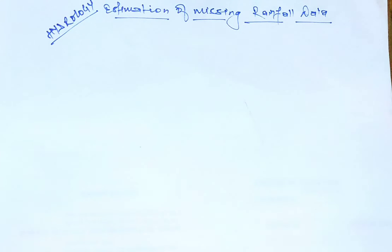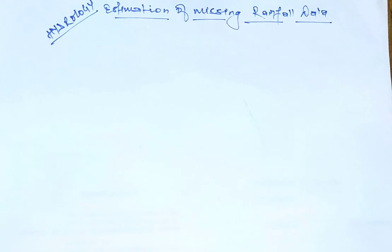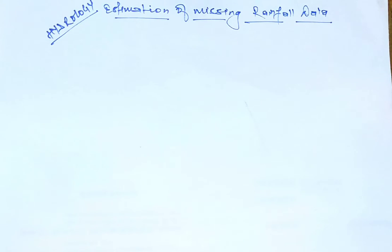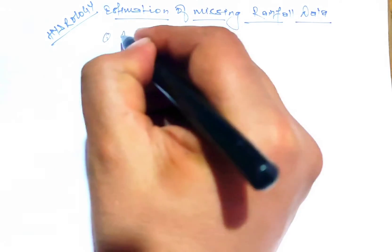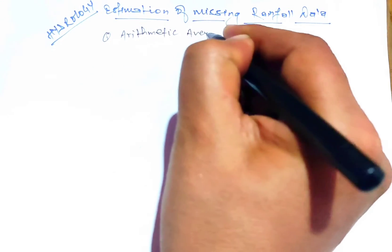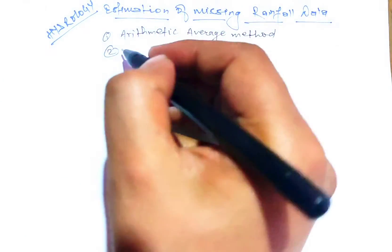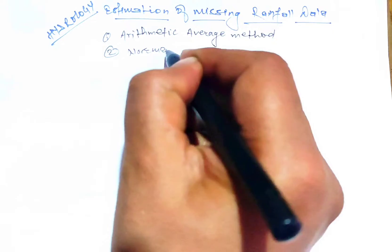Hello everyone, welcome to our channel. Today in this lecture we are going to talk about the estimation of missing rainfall data. Estimating missing rainfall data is a common task in hydrology and meteorology, especially when dealing with data sets that may have gaps or missing values. Several methods can be used; here we will talk about two: the arithmetic average method and the normal ratio method.